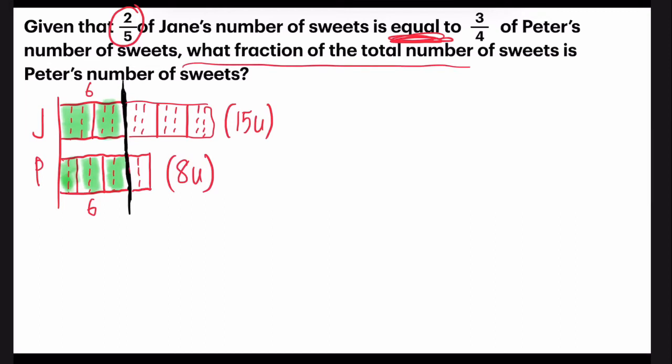What fraction of the total number of sweets is Peter's? Okay, so Peter, he has eight units in all. And I have to find the total, which is eight plus 15. I will get 23. So the fraction to my answer is eight out of 23.